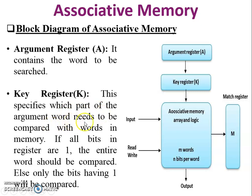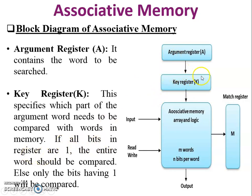The key register specifies which part of the argument word needs to be compared with the word in memory. The key is made up of data or part of data. If all bits in the key register are one, the entire argument word is compared with the associative memory; otherwise, only the bits having one are compared.